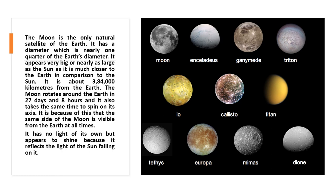It is because of this that the same side of the moon is visible from the earth at all times. Because the moon is taking the same time for rotation and revolution — 27 days and 8 hours — that is why we always see the same face of the moon.